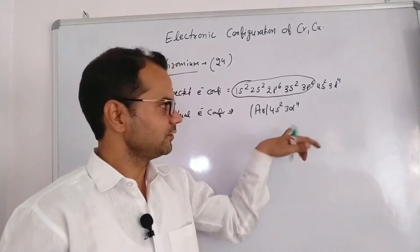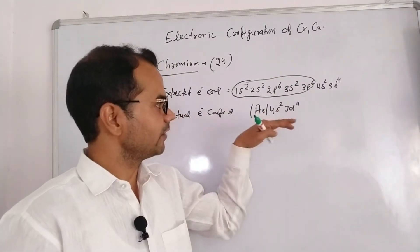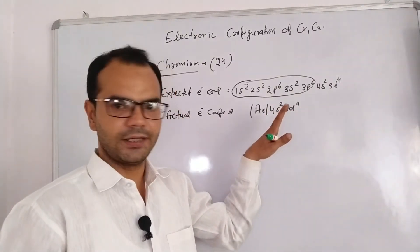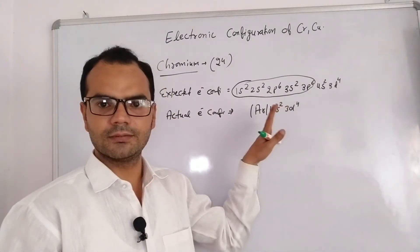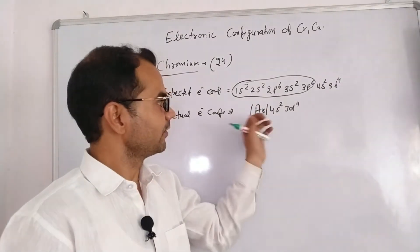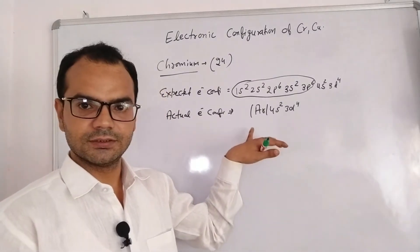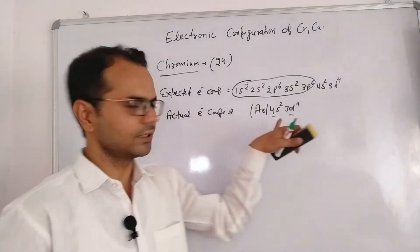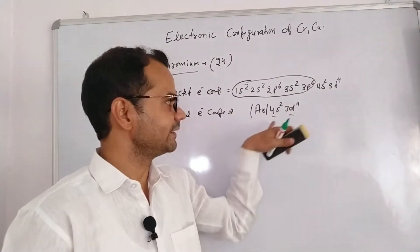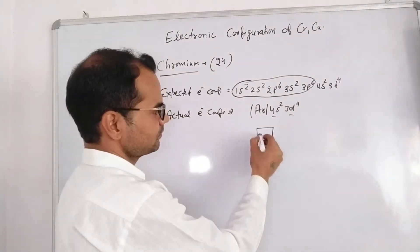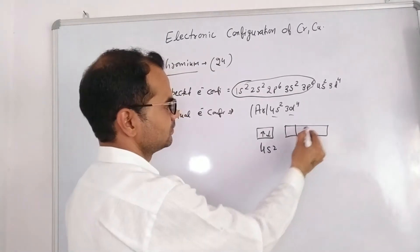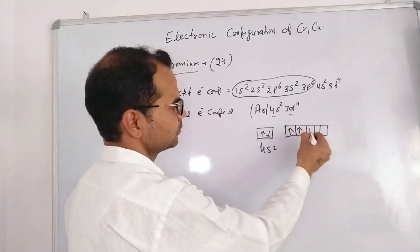Now let's talk about stability. As we know, the d subshell contains five orbitals, and if one electron is present in each of those five orbitals, they are called half-filled orbitals. Half-filled orbitals and fully-filled orbitals are more stable. Comparing 4s² and 3d⁴, these two orbitals have comparable, almost equivalent energy. Let me represent this in orbital boxes: 4s² and 3d⁴.